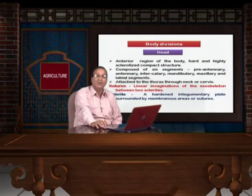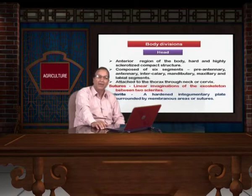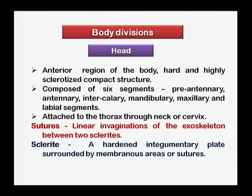The first division, which is the head, is the anterior-most region of the body. It is made up of six segments which can only be seen when the insect is developing. Out of the six segments, only four segments can be seen during the adult stage. The other two segments — the pre-antennal and the intercalary segments — can only be seen during embryonic development.